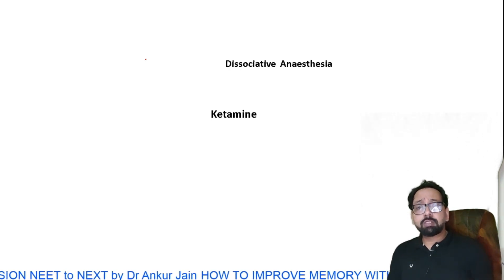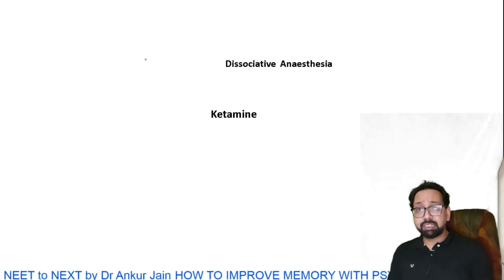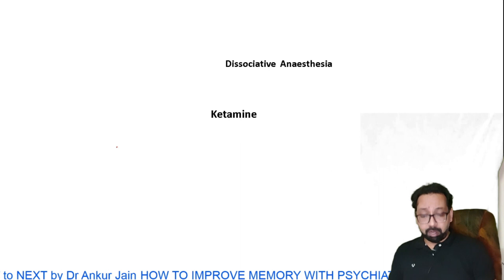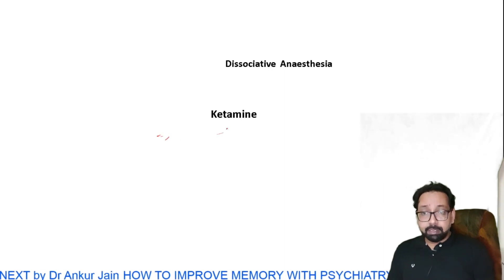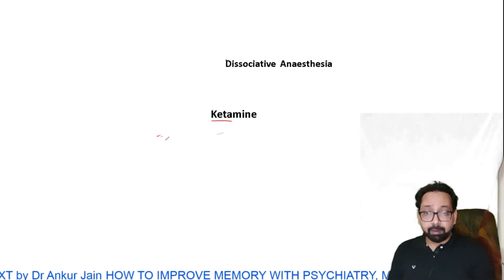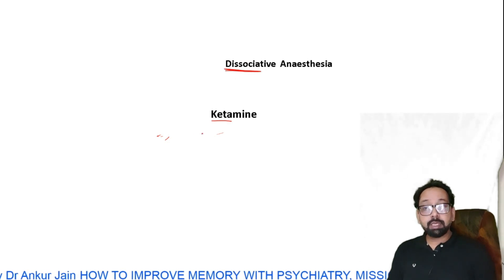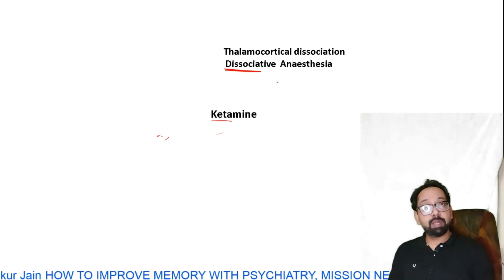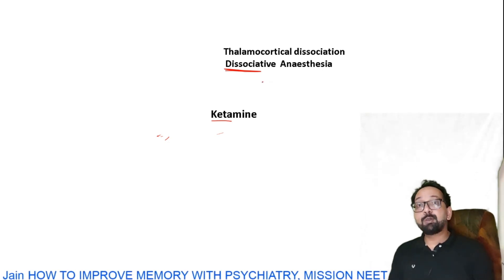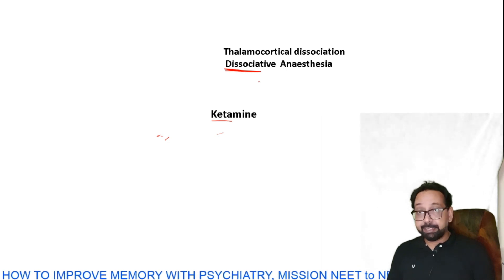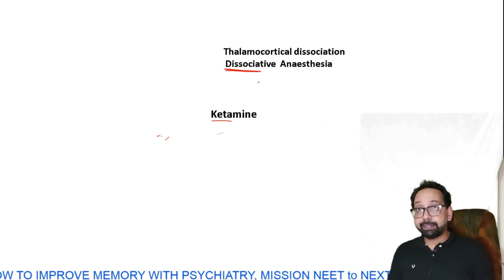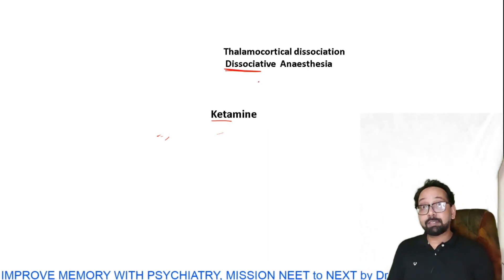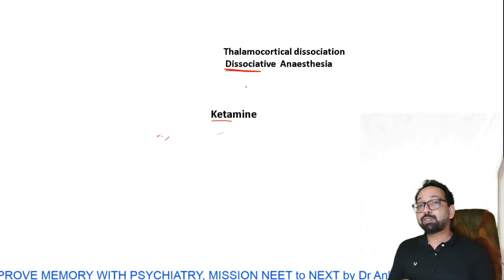For ketamine, the first question asked is that ketamine produces dissociative anesthesia. To remember in Hindi: 'ketamine kata' — kata means dissociate. It produces thalamo-cortical dissociation, meaning no pain and no orientation, but the patient is conscious. Because the patient has no pain, it can be used for superficial procedures like burn dressing, but at a very low dose.